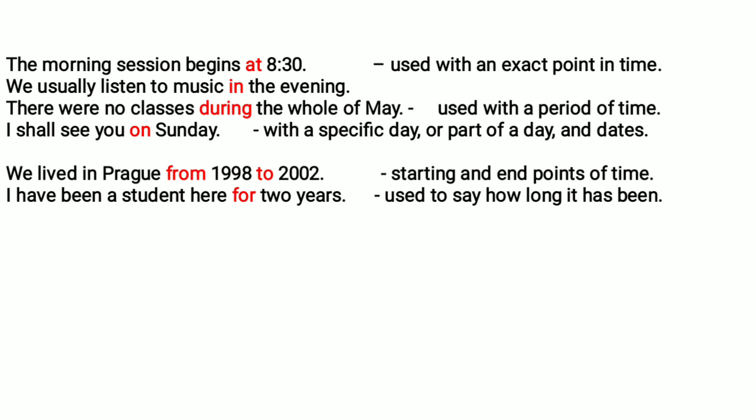'I have been a student here for two years.' Here you are giving a period of time — the total duration. When a starting point and an end point are given, you use 'from' and 'to.' When the total period of time is given, such as 'two years,' you use 'for.'